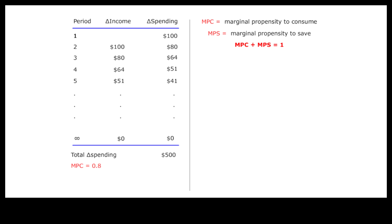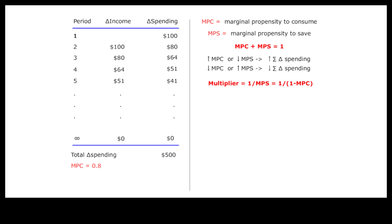Our two previous examples show that the larger the marginal propensity to consume, or the smaller the marginal propensity to save, the larger will be the multiple of additional spending for a given amount of stimulus injection. Thus the expenditure multiplier can be expressed in equation form as the reciprocal of the marginal propensity to save, or the reciprocal of 1 minus MPC.